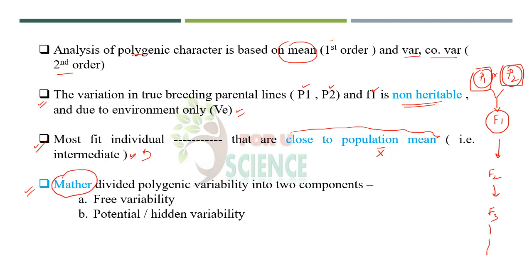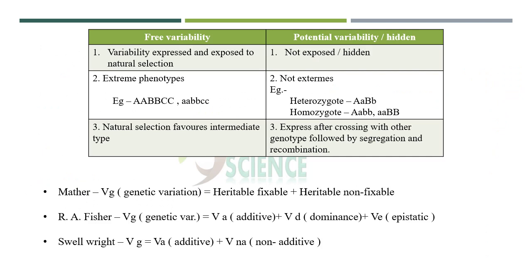The method that divided polygenic variation into two components — one is free variability and another is potential or hidden variability — is important in terms of availability for selection. In case of free variability, the variability is expressed or exposed to natural selection, meaning these variations are easily accessible. But in the case of potential variability, there is potential but it is hidden — it is not exposed to nature.